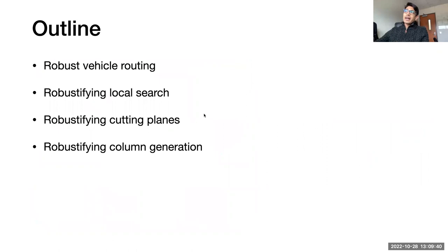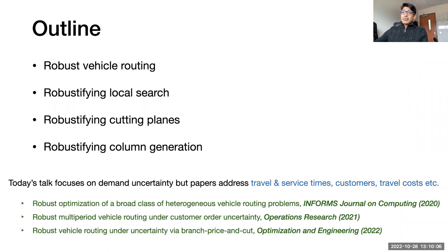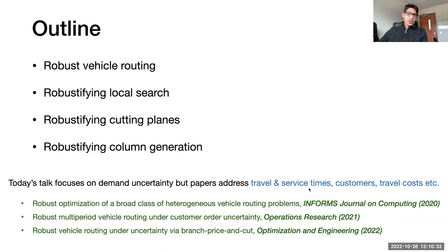To address that, I'll first talk about what the robust vehicle routing problem means, giving a brief problem statement. Then, before talking about cutting planes and column generation, I'll motivate our approach by talking about how it applies to local search. I also want to preface that today's talk focuses purely on demand uncertainty, but we have done some work showing how these ideas can also address uncertainty in travel times, service times, travel costs, and so forth — I just won't be covering that today to keep things simple.